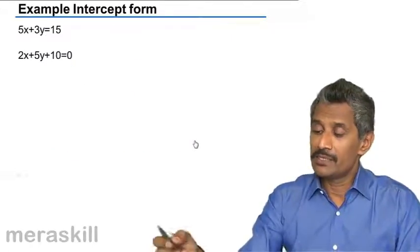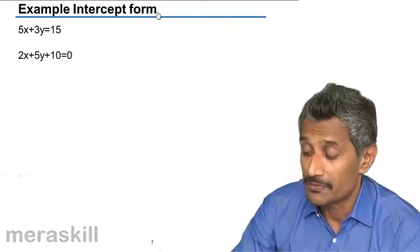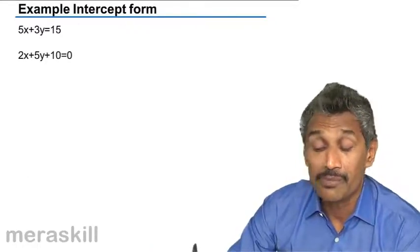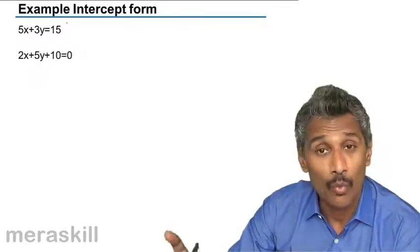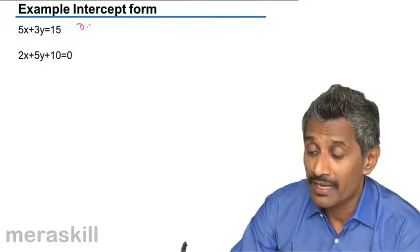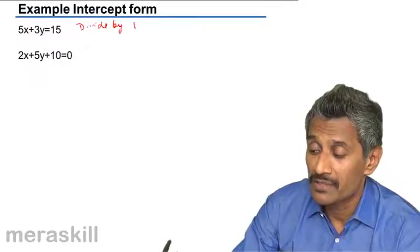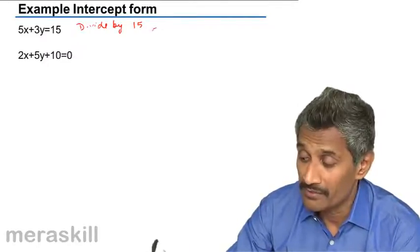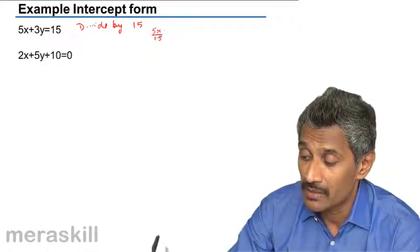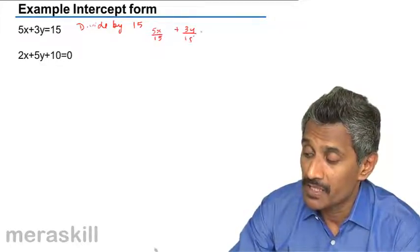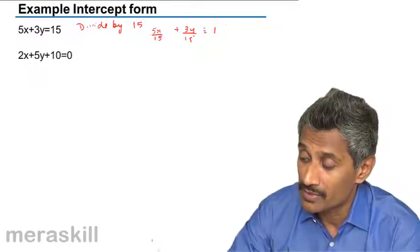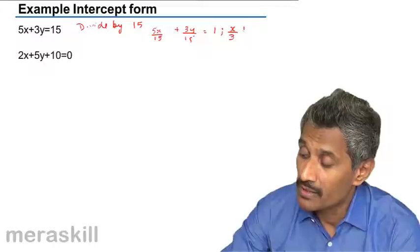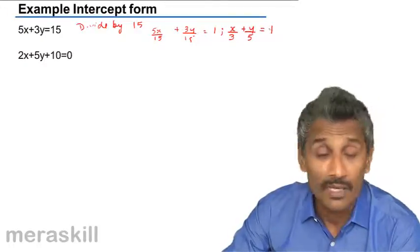Then for example, let's take this example: 5x plus 3y is equal to 15. Now we want it in the two-intercept form or intercept form. Remember the right hand side is 1. So you can divide by 15 just to see that the constant becomes 1. So you get 5x upon 15 plus 3y upon 15 is equal to 1, which means that x upon 3 plus y upon 5 equals 1.